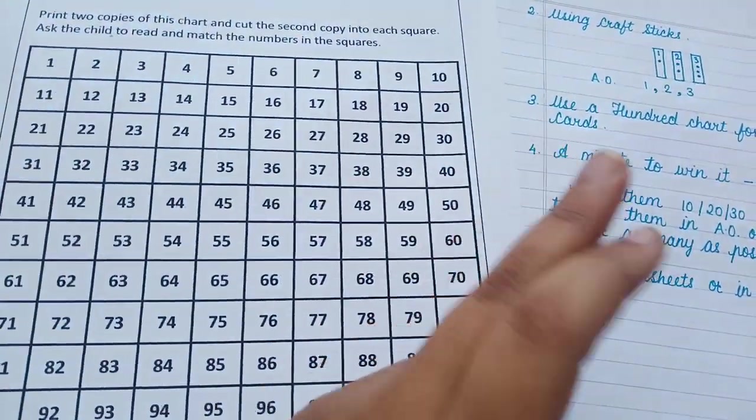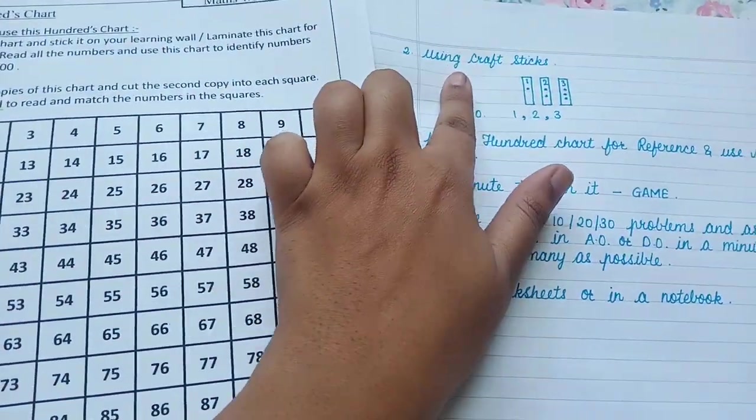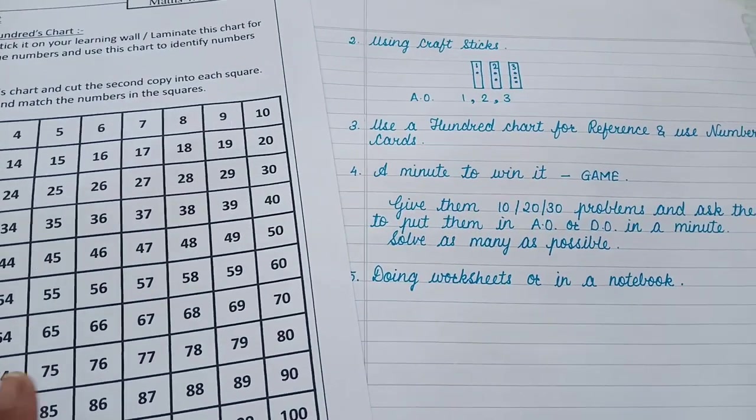Now hundreds chart is useful for numbers from 21 to 100. For numbers from 1 to 20, I would suggest you to do the craft sticks and the number line.